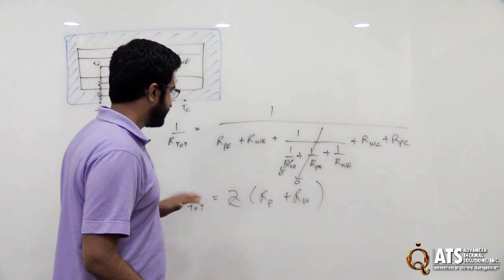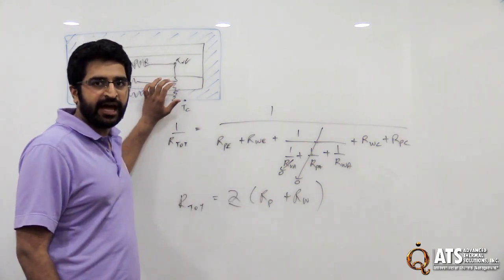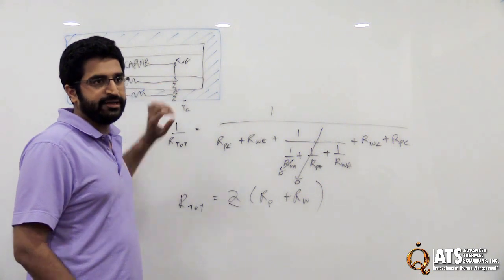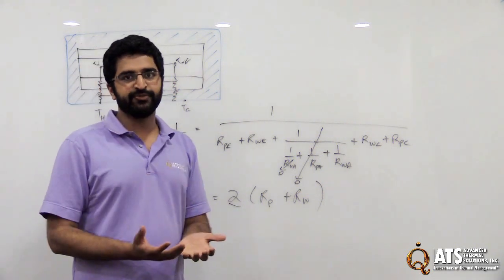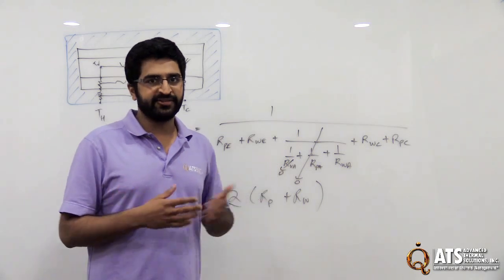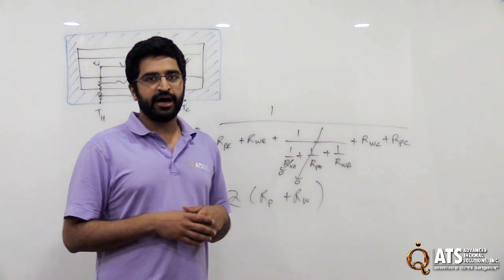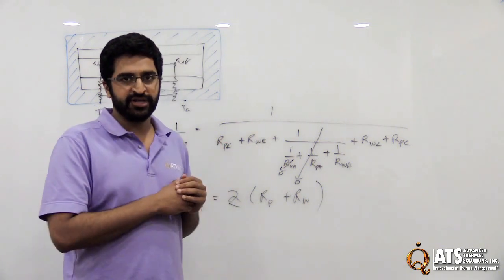Alright guys, so there you have it. The final equation shows, like I said, what's important is the axial portion. It depends on what your heat pipe is made out of. If you're choosing some material that's not as conductive as copper, it's gonna have an effect on the effective thermal conductivity of your heat pipe.